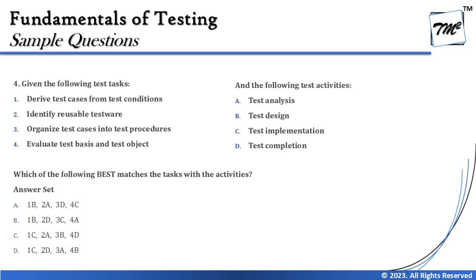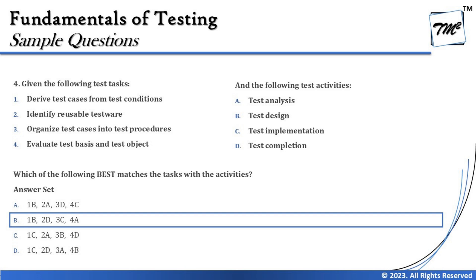So: test cases map to test design, test procedures map to test implementation, and basis analysis maps to test analysis. That leaves 'identify reusable test work products,' which now makes complete sense going to test completion — because at the end of the project, we identify reusable work products to be archived or shared with other stakeholders, rather than discarding them. The right answer is B: 1 goes to B (test design), 2 goes to D (test completion), 3 goes to C (test implementation), and 4 goes to A (test analysis). This is the level of understanding you need — able to conclude answers at your fingertips.